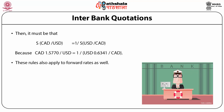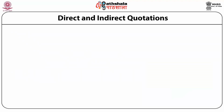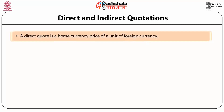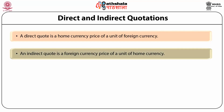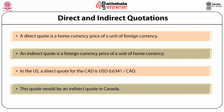These rules also apply to forward rates as well. We will denote an outright forward quote using the following notations. Direct and indirect quotations: a direct quote is a home currency price of a unit of a foreign currency; an indirect quote is a foreign currency price of a home currency. In the US, a direct quote for the Canadian dollar is US dollar 0.6341 per Canadian dollar. This quote would be an indirect quote in Canada.